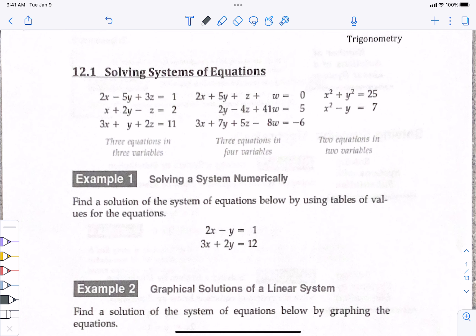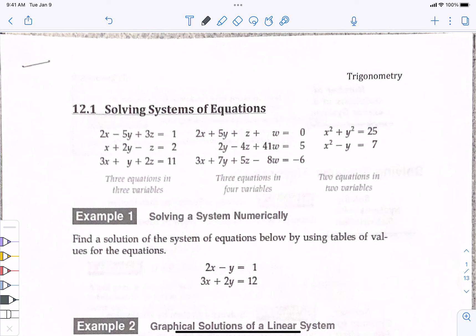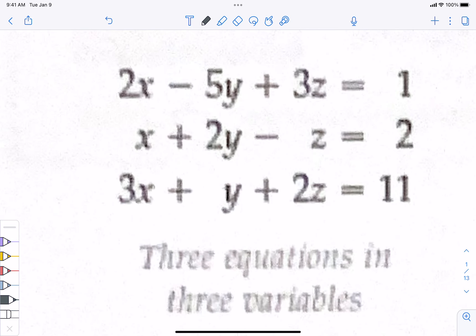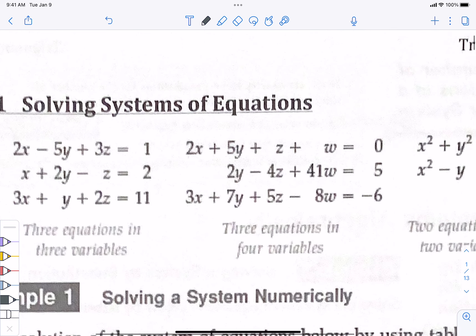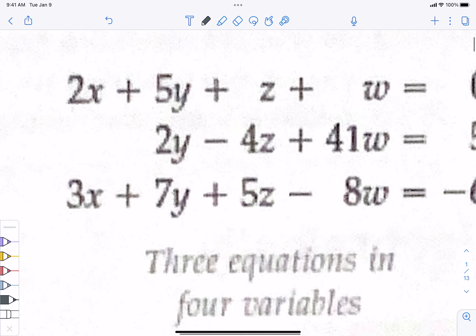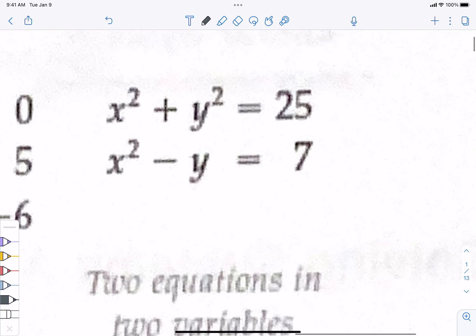All right, solving systems of equations. We have equations that look like this. This is a system of equations. Normally we just have two variables, x and y, and two equations. Now we have three variables and three equations. This one has four variables with three equations. How unpleasant is that? This one has squares in there.